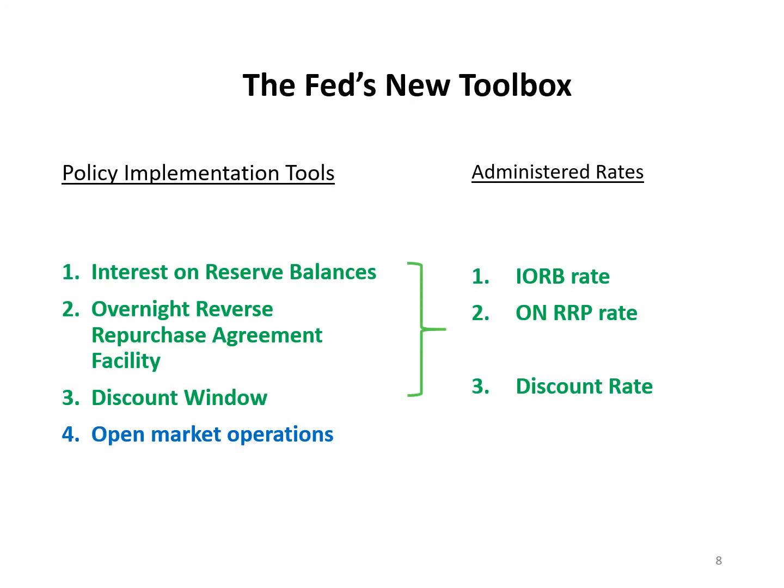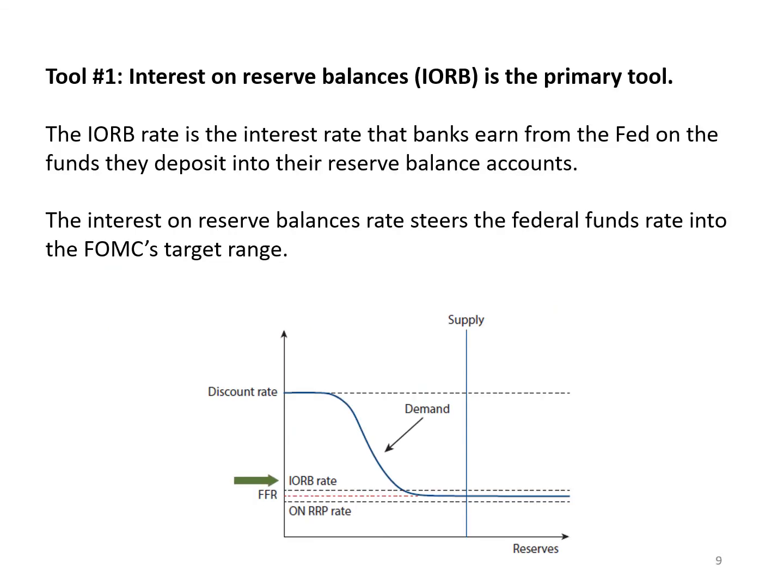The four tools are: interest on reserve balances, overnight reverse repurchase agreement facility, the discount window, and open market operations. The three tools with rates associated with them are called administered rates because the Fed sets them directly. Interest on reserve balances has the interest on reserve balances rate, the overnight reverse repurchase agreement facility has the overnight reverse repurchase agreement rate, and the discount window has the discount rate.